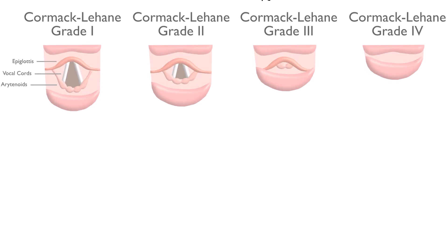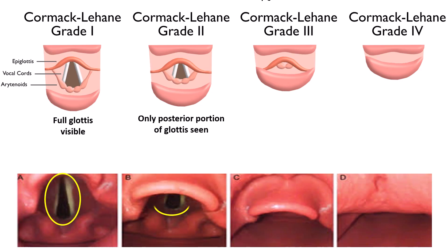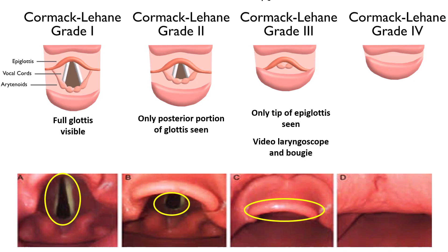Once airway assessment is done, we proceed with laryngoscopy, where we encounter different views of glottic structures described by the Cormack-Lehane grading system. Grade 1 means the full glottis is visible, indicating easy intubation. Grade 2 shows only a partial view of the glottis, which may require manipulation such as anterior neck pressure. Grade 3 reveals only the epiglottis, making intubation more challenging and often needing adjuncts like a bougie or video laryngoscope. Grade 4 shows neither the glottis nor the epiglottis, representing a potentially very difficult or impossible intubation without advanced airway techniques. This grading system helps anesthesiologists anticipate difficulties, plan alternative strategies, and document airway findings for future reference.